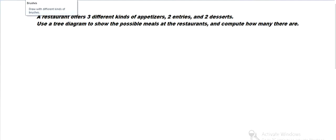We've got a restaurant that has three different kinds of appetizers, two entrees, and two desserts. We want to use a tree diagram to show this.